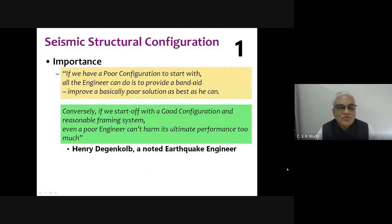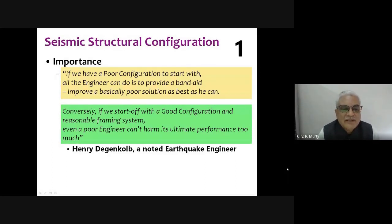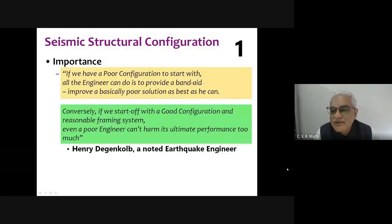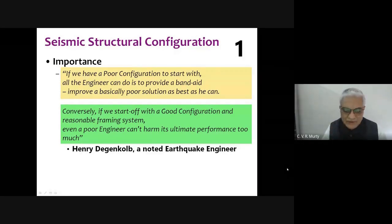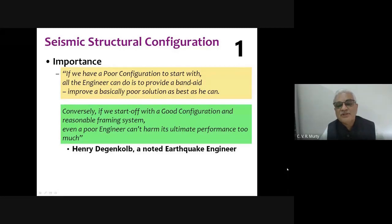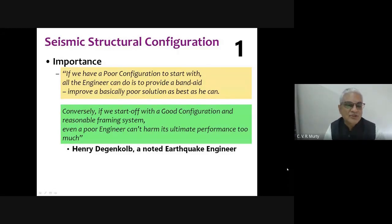A noted earthquake engineer said: 'If we have a poor configuration to start with, all the engineer can do is provide band-aid improvements to a basically poor solution. Conversely, if we start with a good configuration and reasonable framing system, even a poor engineer cannot harm its ultimate performance too much.' The choice of configuration largely decides structural safety. With a good configuration you win 80% of the performance; a good engineer brings it to 95%. With poor configuration, even the best engineer can add only a little.